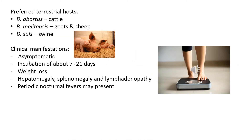This zoonotic disease's species differ primarily in their preferred terrestrial hosts. Brucella abortus is mainly found in cattle, though some cases of Brucella melitensis can also be found in cattle. However, Brucella melitensis is mainly found in goats and sheep, while Brucella suis is found in swine.